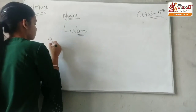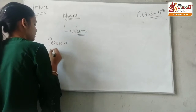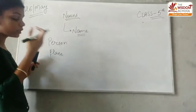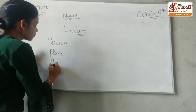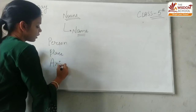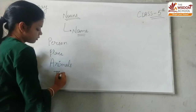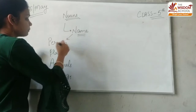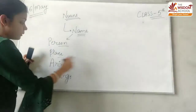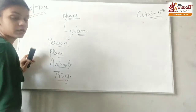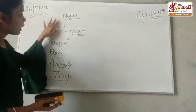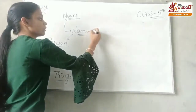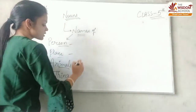Naam kiska hota hai? Person ka hota hai. Place ka hota hai. Animals ka hota hai. Agar aap ghoomne chahte ho, to alag alag jagaah hoti hai na, place hota hai. Unka apna name hota hai. Animals ka hota hai, birds ka hota hai, things ka hota hai. So, nouns are the names of person, place, animal, things.